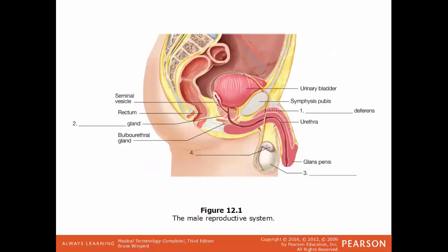It is a lateral view of the male reproductive system. The penis here, and the testes here. On top of that would be the epididymis and the vas deferens. It goes all the way around the urinary bladder. Seminal vesicles, a prostate gland, and the urethra is the tube that conveys both urine and semen for the male.